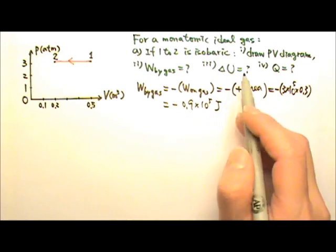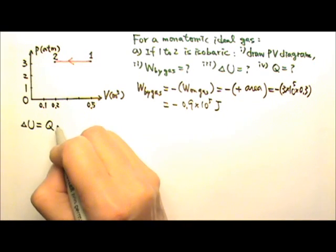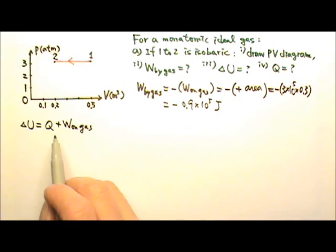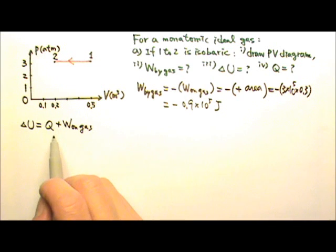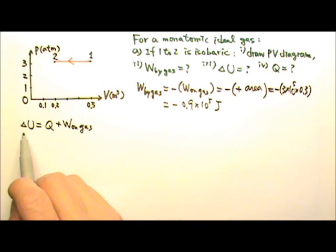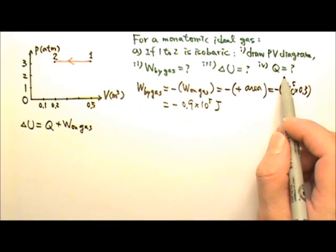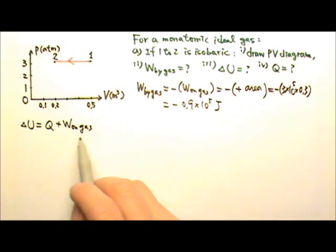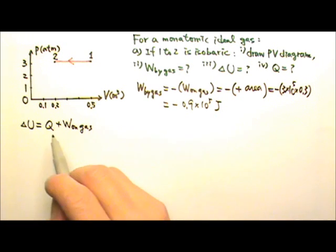For ΔU, we have the first law: ΔU = Q + W, where W is the work done on the gas. But we do not have Q — we just found the work. Since we don't have Q, and the only equation involving Q is the first law, we cannot find ΔU using the first law directly. We need a different method to find ΔU first, then use the first law to find Q.